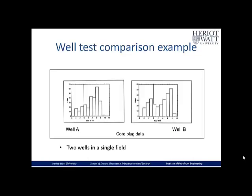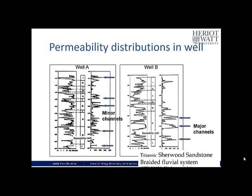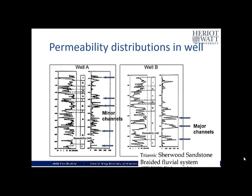Now we come to an example comparing well test and core data. We have two wells, well A and well B, and we show histograms of the core data on a natural log scale. It is also important to see the vertical distribution of porosity and permeability in the well. These two logs show permeability data — the left track on a log scale and the right track on a linear scale. In well A the high permeability features are in a series of minor, relatively thin channels, whereas in well B they are in major, quite thick intervals. This work comes from an SPE paper published some years ago.